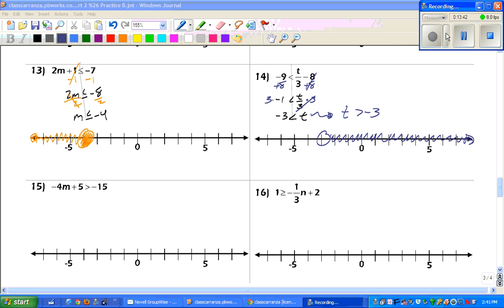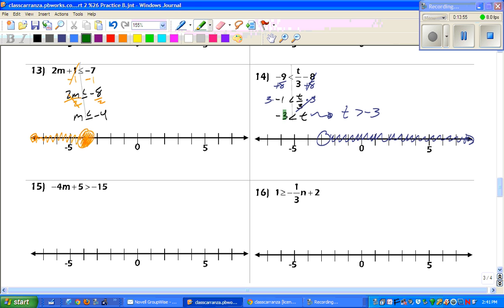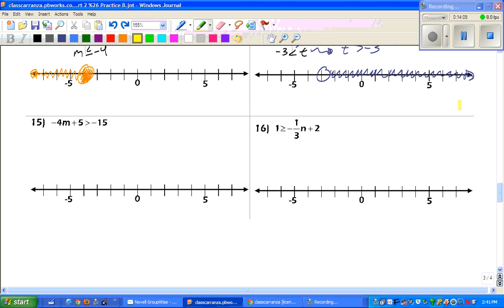And there are both 13 and 14. 14, be careful with your negative signs. Negative 7 minus 1 is negative 8. It is not 6. And with 14, when we get our answer over here, the variable is not first, so you have to rewrite it. Number 15 and 16. Go ahead and pause the video. Last two problems. Let's see how you do. And there are your final answers.